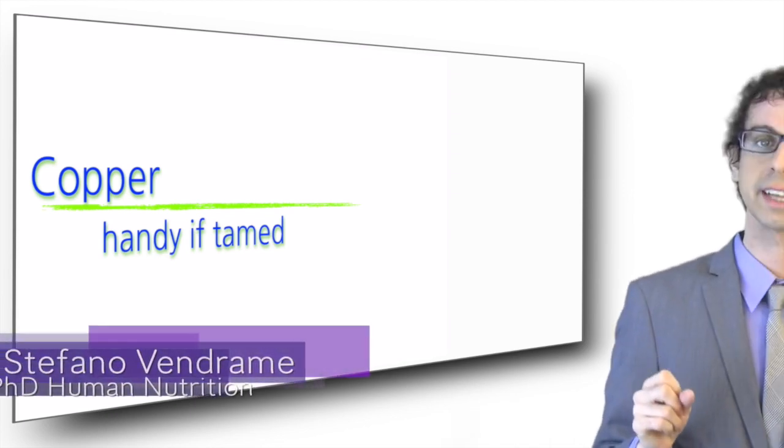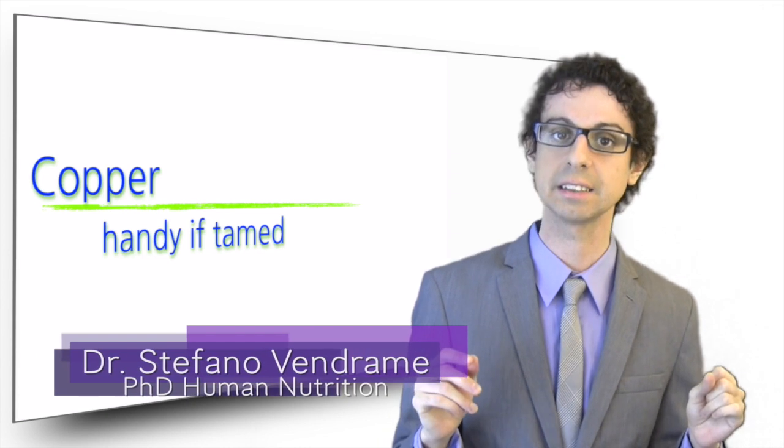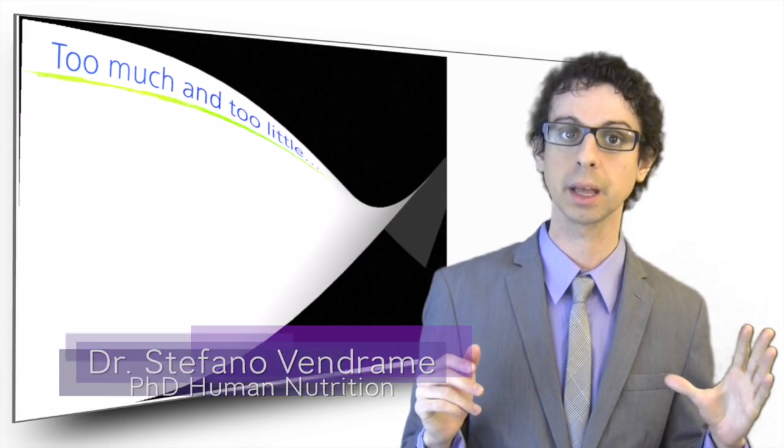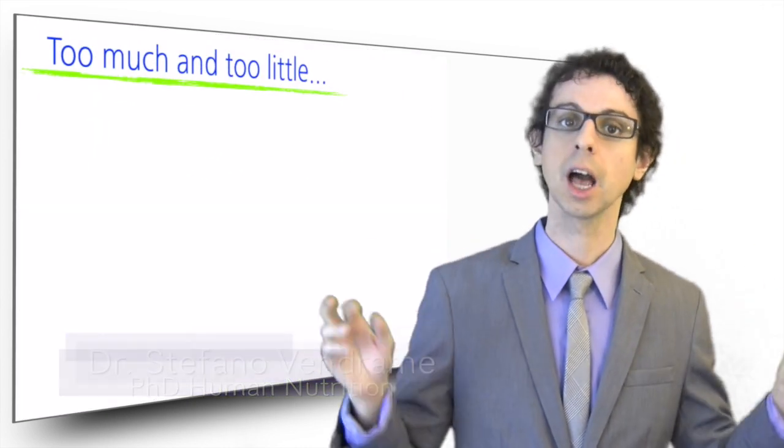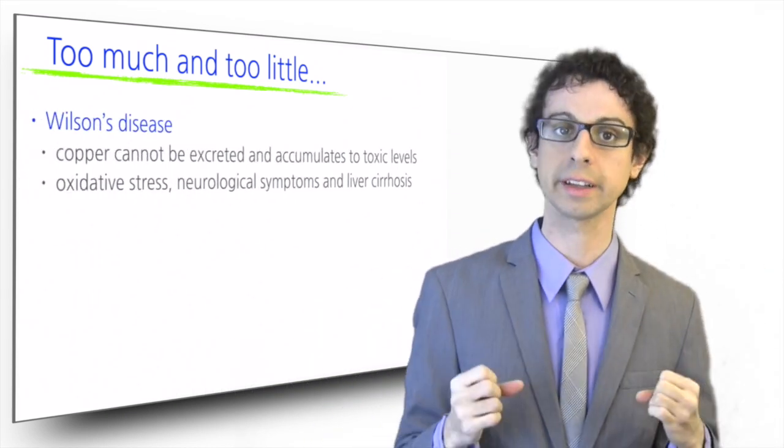Our understanding of copper owes much to two rare genetic diseases involving copper metabolism. In Wilson's disease, copper cannot be excreted and thus accumulates to toxic levels.